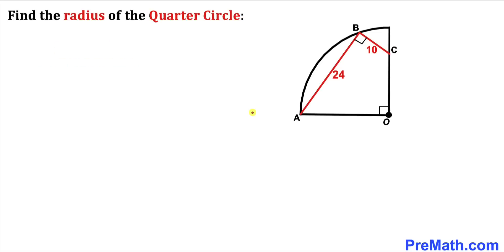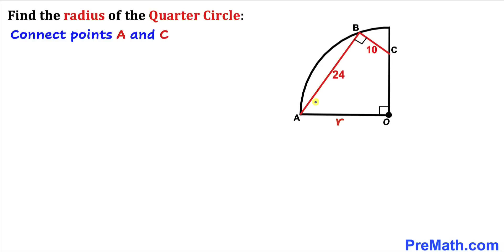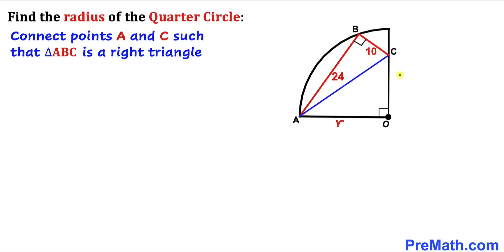The first thing we are going to do, since we are calculating radius OA, is label this radius as lowercase r. Now we are going to find the value of r. Let's go ahead and connect points A and C, giving us a much nicer looking diagram.